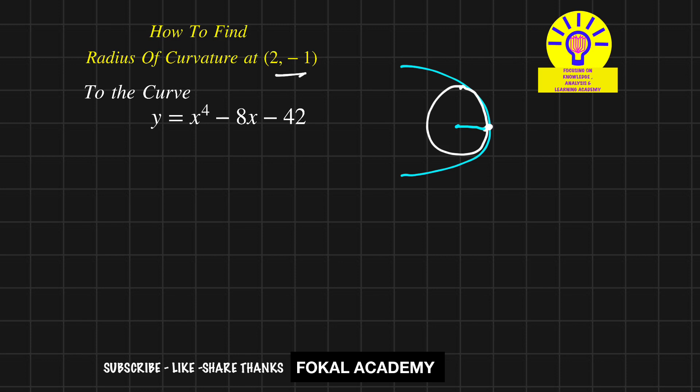Now how can you find the radius of curvature for the given problem? First of all, derivate the given curve two times. The first derivative y₁ = 4x³ - 8. Now again derivate this, we will get second derivative y₂ = 12x².